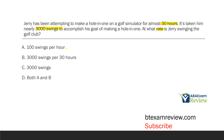What does that give us? A, 100 swings per hour. If you reduce that down, you're going to get a rate of 100 swings per hour. That word 'per' is a pretty clear giveaway for rate. What about B, 3,000 swings per 30 hours? B is the same thing as A — it just isn't reduced down. Both represent the rate we have here. And C, 3,000 swings — that's a frequency, it doesn't have a time. Remember, for rate you need both frequency and time. So the best answers here are A and B: 100 swings per hour, or 3,000 swings per 30 hours.